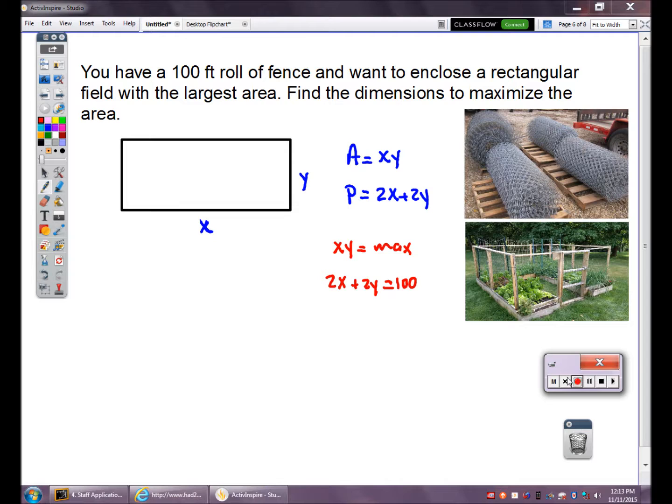Simplify this equation, divide everything by 2. Perimeter is X plus Y equals 50. You can solve this equation for X or Y. I'm going to solve it for Y by subtracting X on both sides. Y is 50 minus X. I'm going to substitute this Y value into my area equation. My area is X times Y, but instead of Y, 50 minus X. This is the formula I'm trying to maximize. The maxes occur when the derivative equals zero.